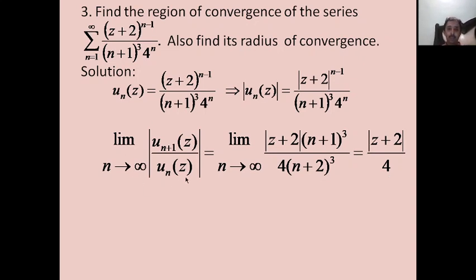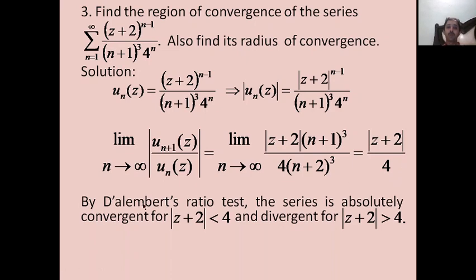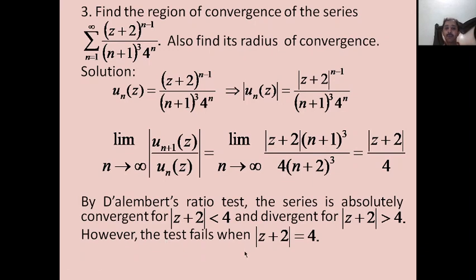By D'Alembert's ratio test, if |z+2|/4 < 1 (i.e., |z+2| < 4) the series is convergent, and if |z+2|/4 > 1 (i.e., |z+2| > 4) the series is divergent. However, the test fails when |z+2| = 4, because then the limit equals 1 and D'Alembert's ratio test fails. We must separately examine the case |z+2| = 4.